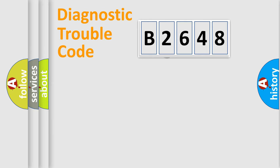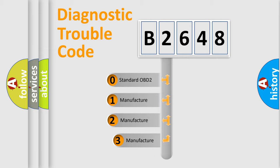Powertrain, Body, Chassis, Network. This distribution is defined in the first character code.